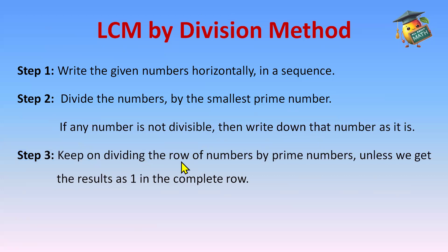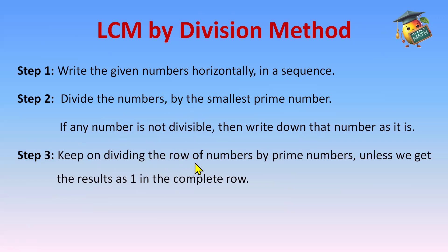Keep on dividing the row of numbers by prime numbers unless we get 1 in the complete row. You'll understand this better with the examples. You have to repeat this process using prime numbers until the last row is all ones, then write the prime divisors below.